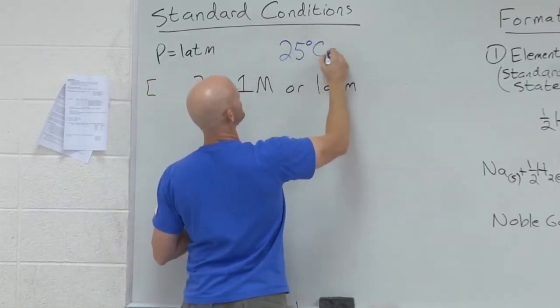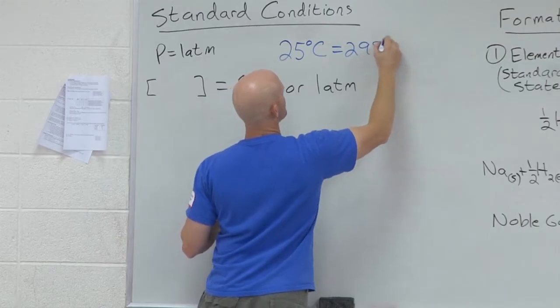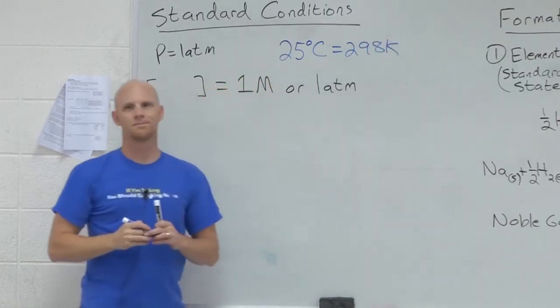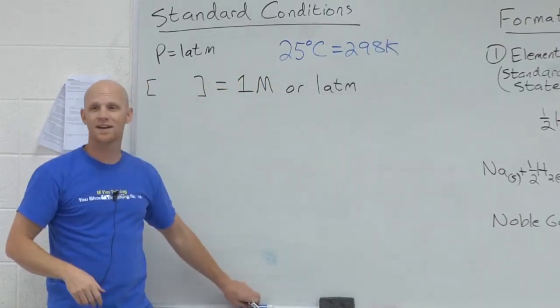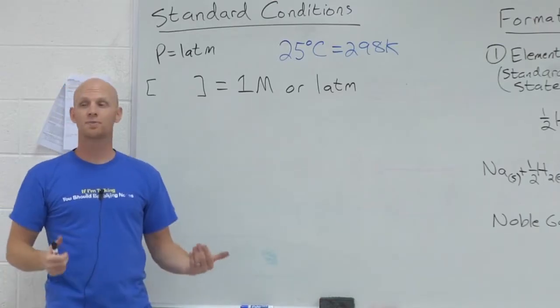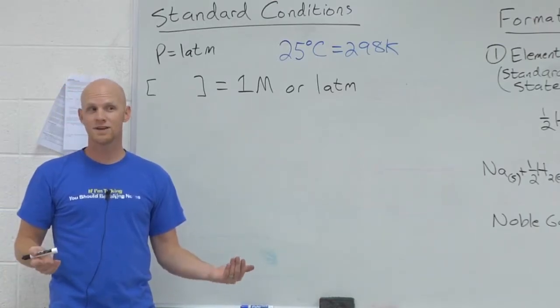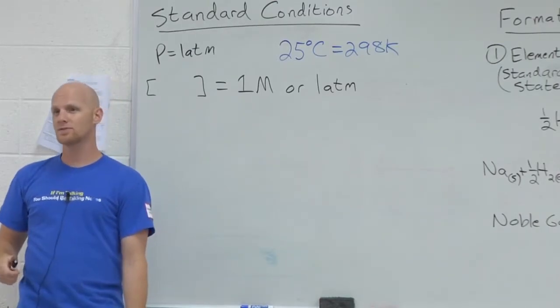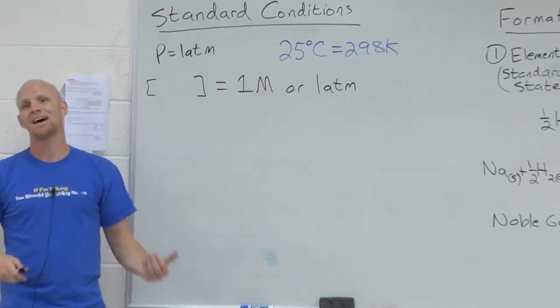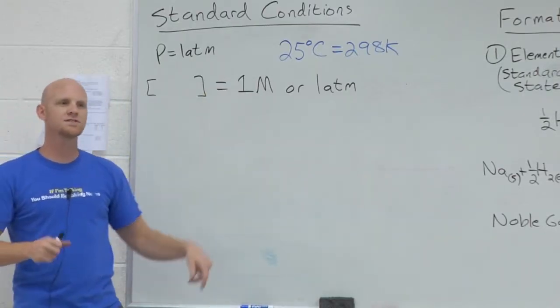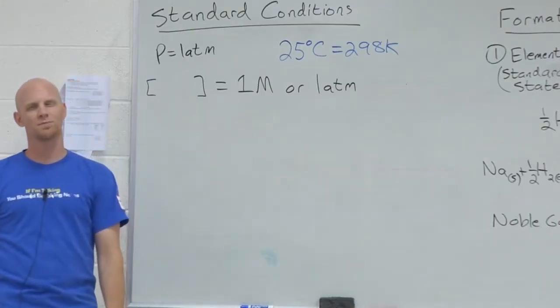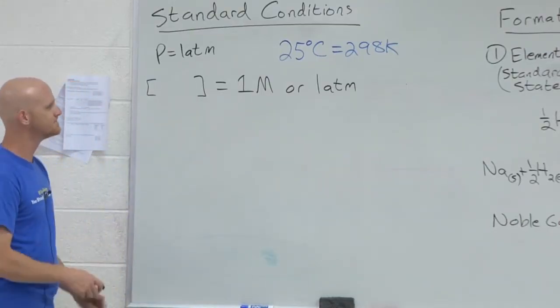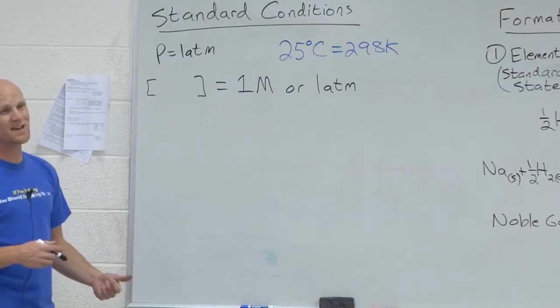And sometimes it kind of gets grouped into standard conditions. It's technically not, but you'll see it so commonly that I'm going to throw it up there. 298 Kelvin, 25 degrees Celsius, is approximately room temperature. And that's what we use. So this is different temperature than STP. And again, it's really not technically part of standard conditions, but in Gen Chem, it usually gets grouped in with it. Cool. These are your standard conditions.